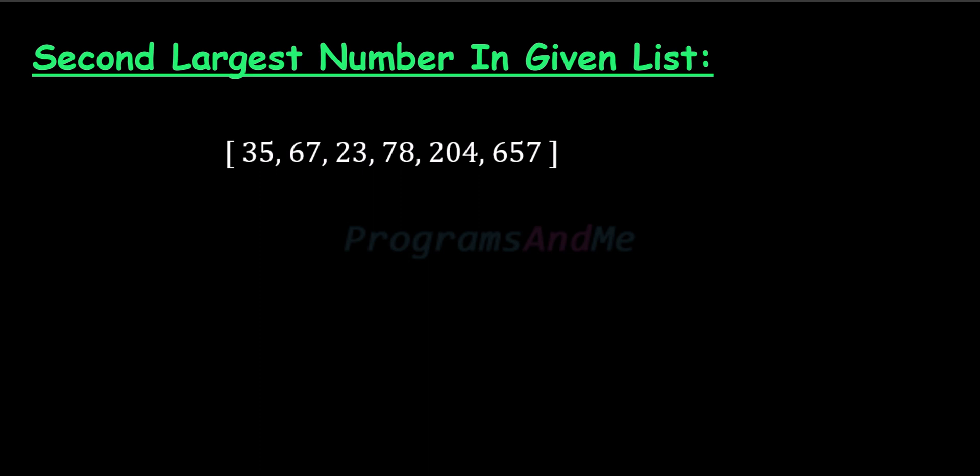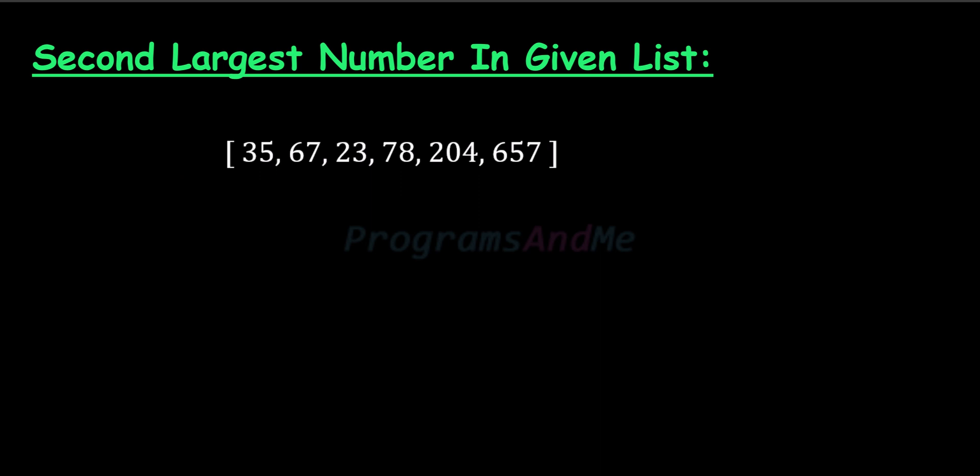The input of our program is a list with integer numbers and the output is the second largest number present in that list. To find the second largest element in the list, we will use the sorting method.